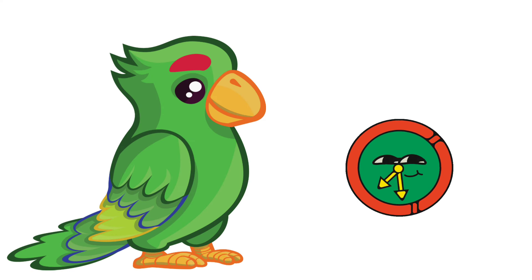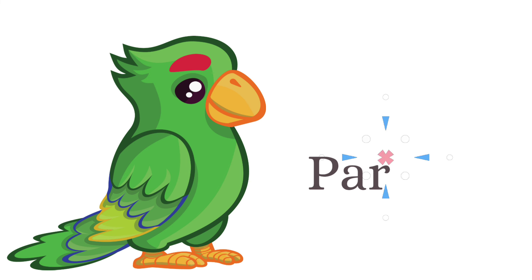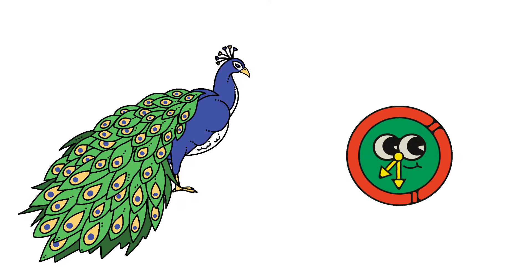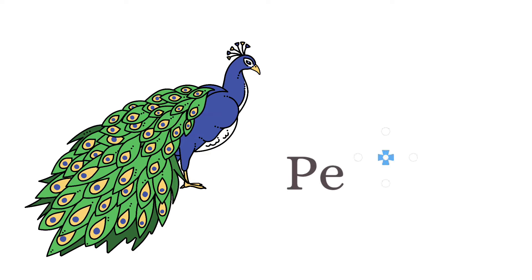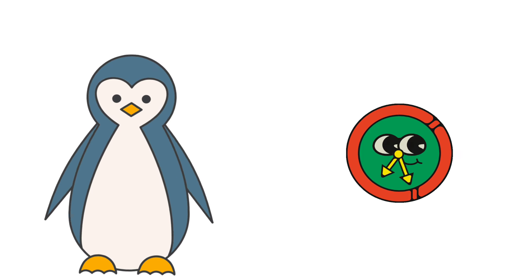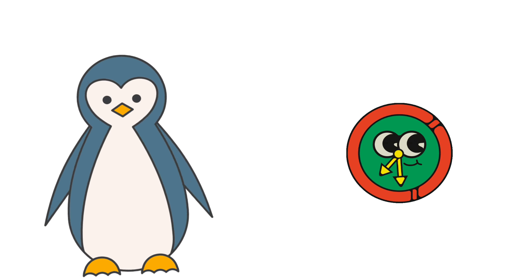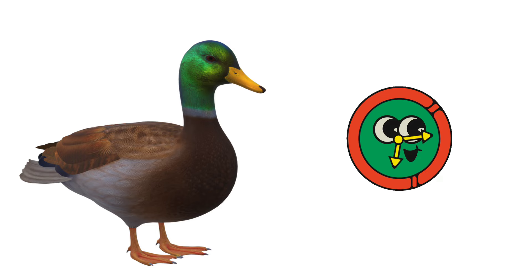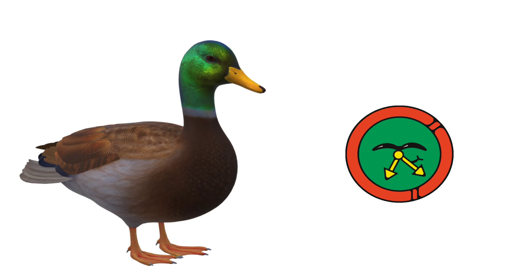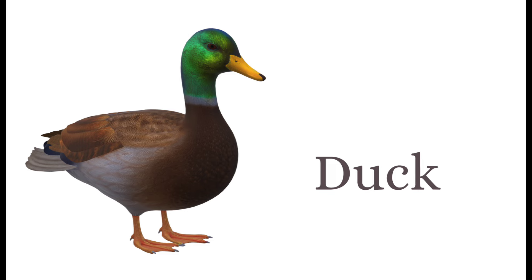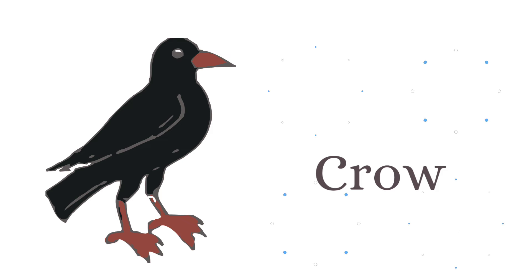What is the name of this bird? This is a parrot. What is the name of this bird? This is a peacock. What is the name of this bird? This is a penguin. What is the name of this bird? This is a duck. What is the name of this bird? This is a crow.